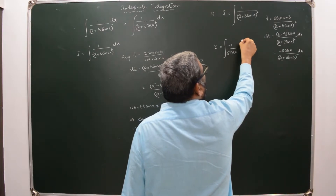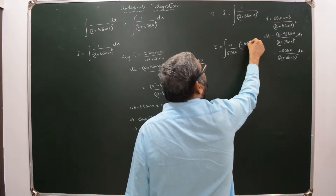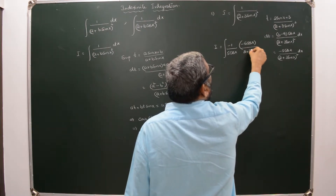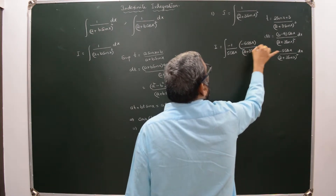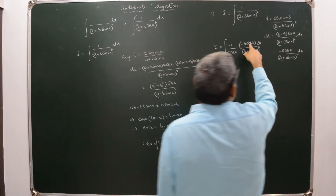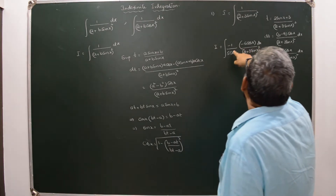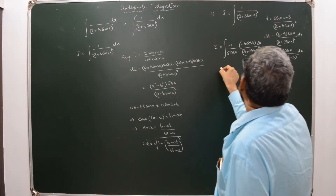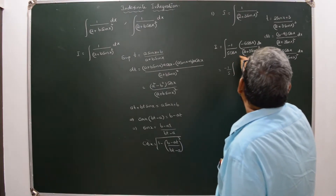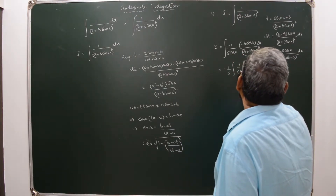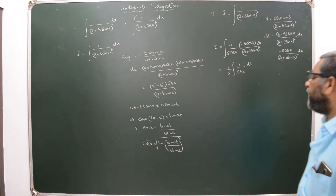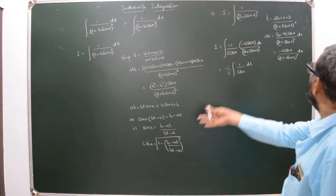So I = ∫(-1/5·cosX) · (-5·cosX/(2 + 3·sinX)²) dx. The complete expression becomes dt. To compensate, I write 5·cosX here, and this can be taken as -1/5 · (1/cosX) · dt.